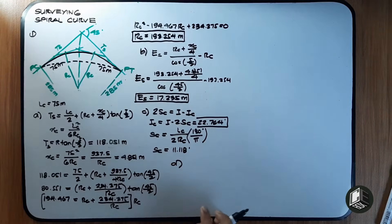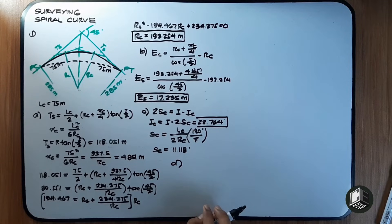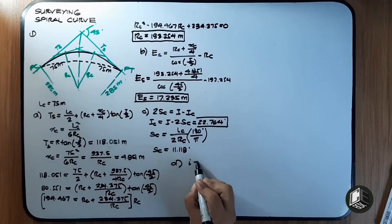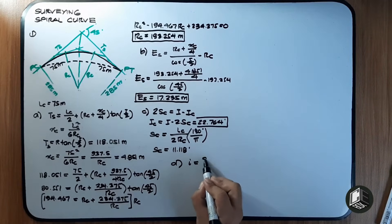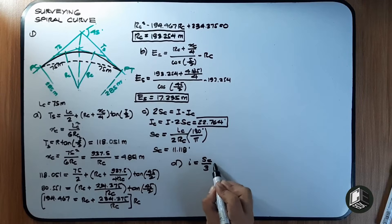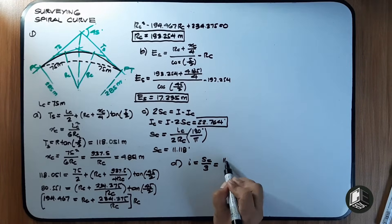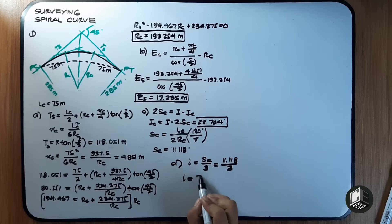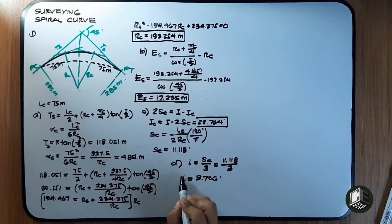For Letter D, we find the deflection angle at the end point of the spiral. The deflection angle equals one-third of θs. So the deflection angle = 11.118 / 3 = 3.706 degrees.